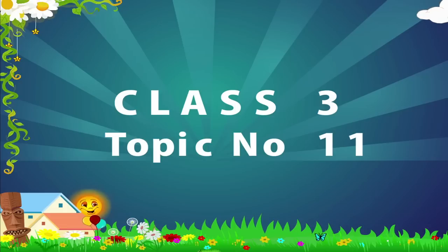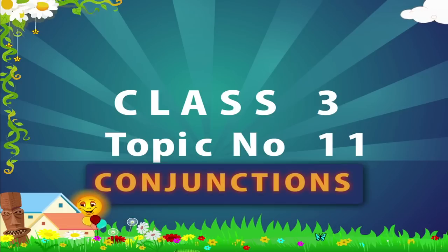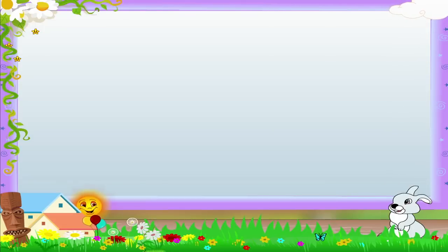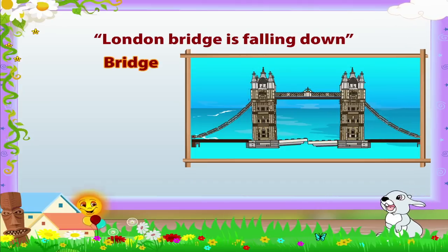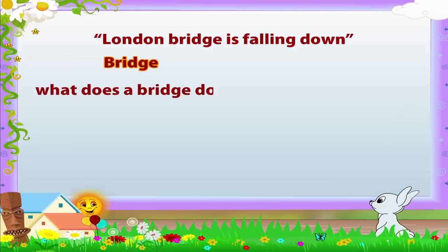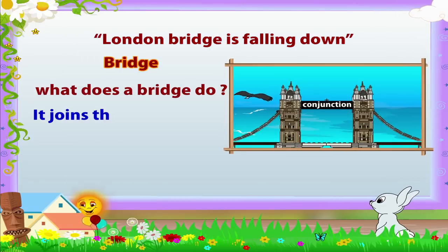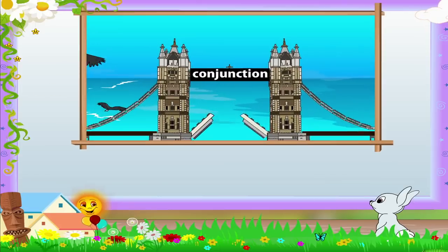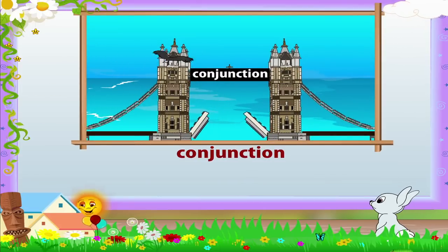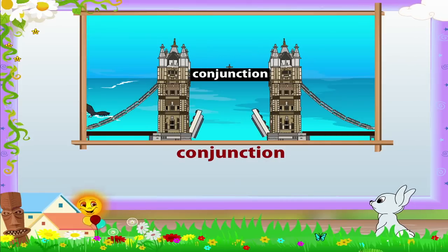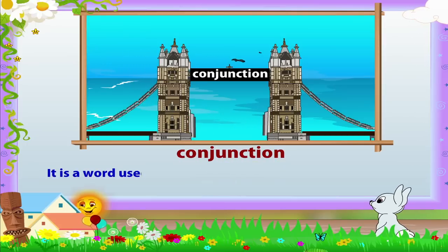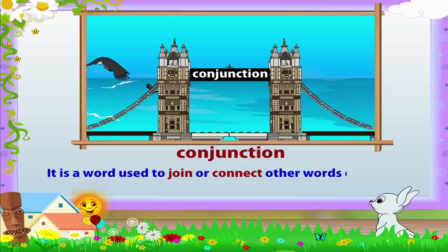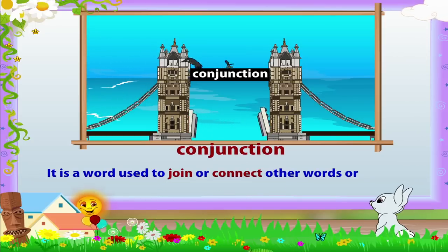Class 3, Topic Number 11 — Conjunctions. Do you remember the nursery rhyme you learnt in school? London Bridge is falling down. You know what a bridge is, and what a bridge does — it joins things together. Now look at this bridge; it has the word 'conjunction' written on it. That's because a conjunction is a joining word — a word used to join or connect other words or sentences together.